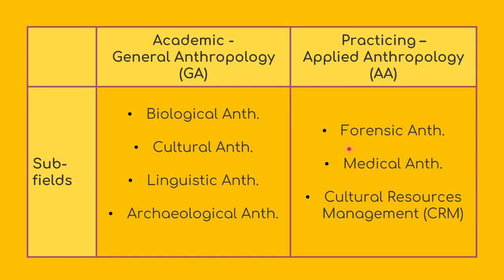On the other hand, for applied anthropology, you have forensic, medical, and cultural resources management. These fields focus on using anthropology in a particular field to help solve problems. For example, forensic anthropology uses anthropological knowledge to identify deceased people — to determine when and how people died, by looking at their bones or bodies to identify what caused the death. That is the use of anthropology in solving criminal cases.